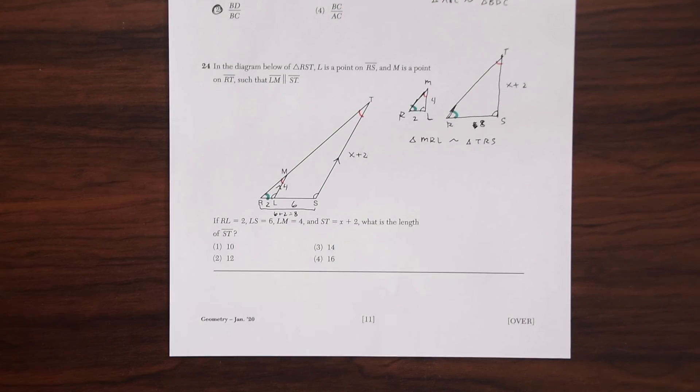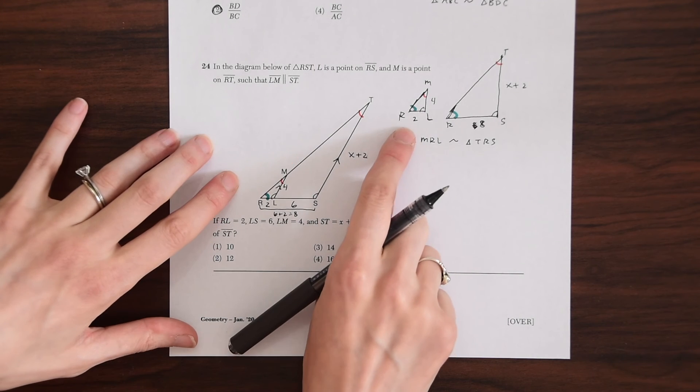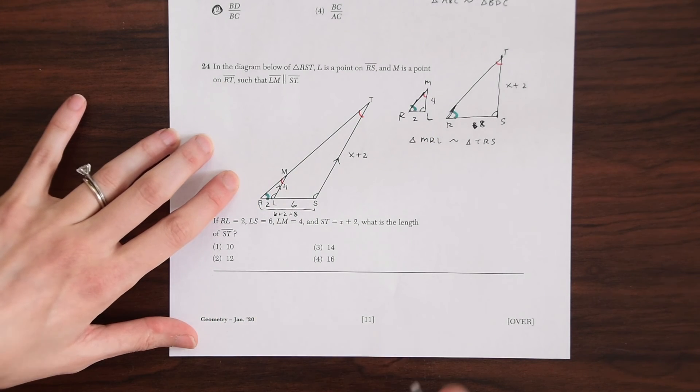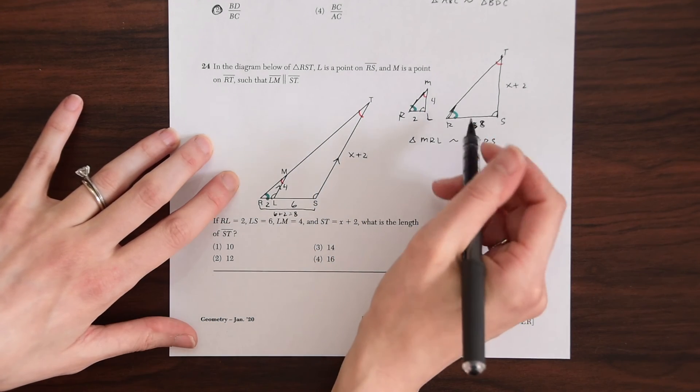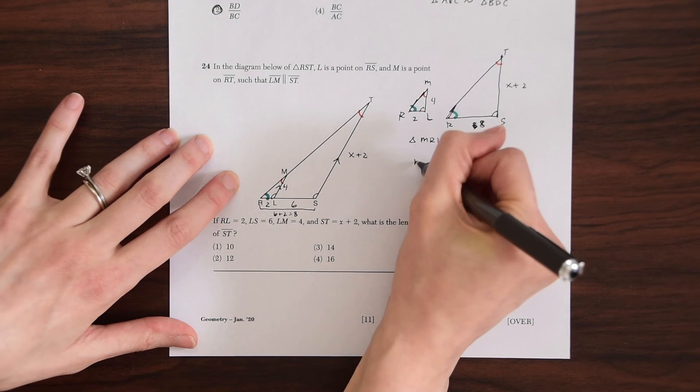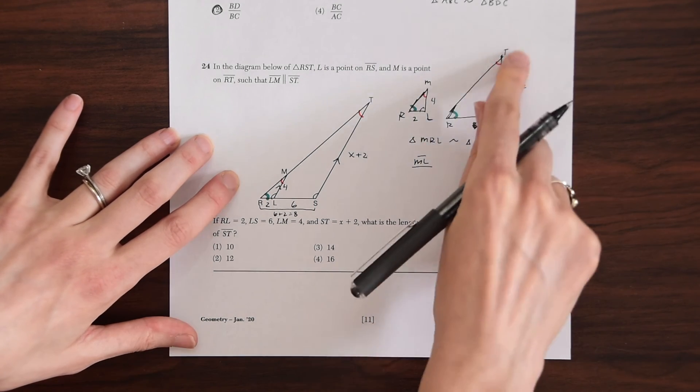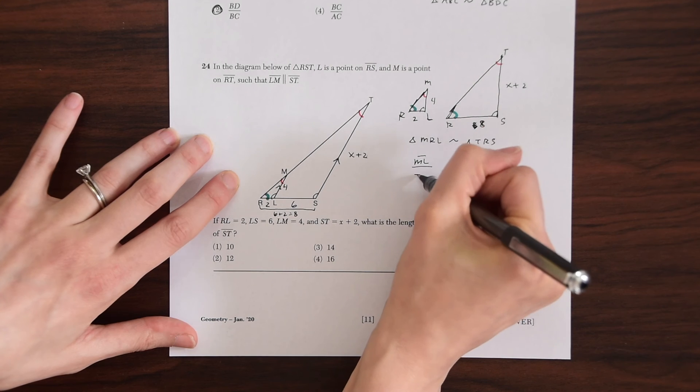So if we know two triangles are similar to each other, we can create a proportion. So let's do that. So this side ML is going to correspond to this side TS. So I'm just writing this out the long way.